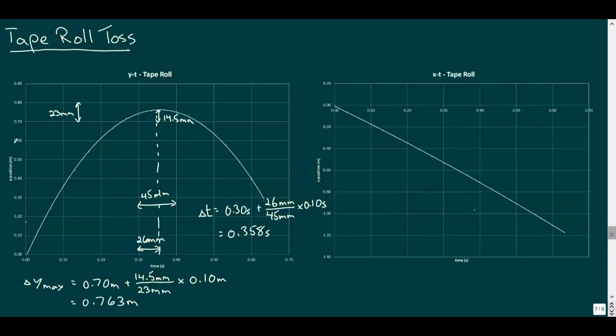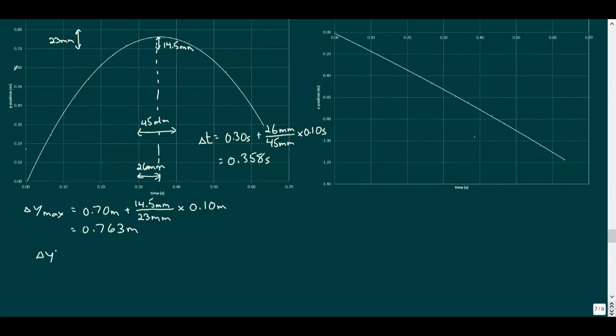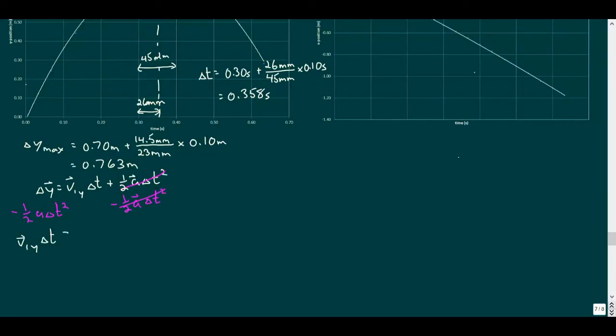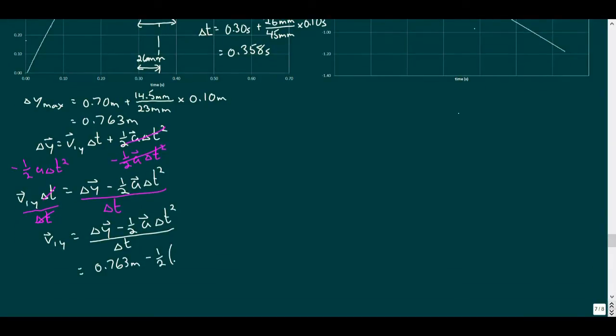So we have the maximum vertical displacement and the time when this occurs, and we have gravity causing a downward acceleration of 9.8 meters per second squared. What if we use that second equation we found in the last video and rearrange the expression to solve for the initial velocity in the y direction? So plugging in the values we measured, we find an initial vertical velocity of 3.89 meters per second upward.